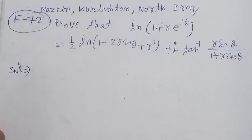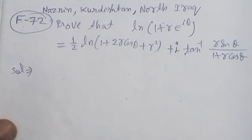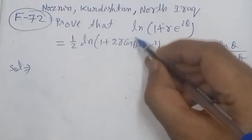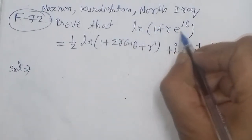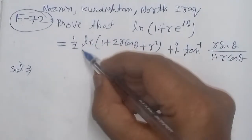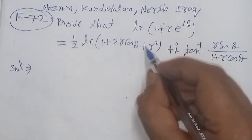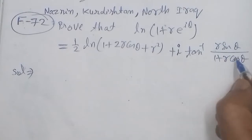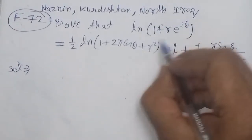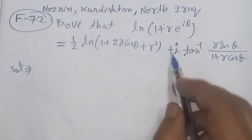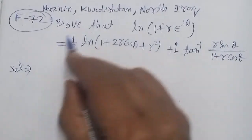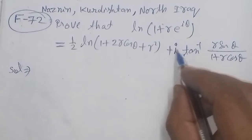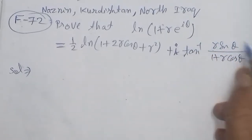Bismillahirrahmanirrahim. On the demand of Najin from Kurdistan, north Iraq, this problem is related to trigonometry. Prove that the natural logarithm of (1 + re^(iθ)) equals ½·ln(1 + 2r·cosθ + r²) + i·tan⁻¹(r·sinθ / (1 + r·cosθ)). Here this value is a complex number, therefore the logarithm of a complex number equals again a complex number. The real part and the coefficient of i — called the imaginary part — together form an imaginary quantity.